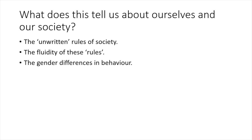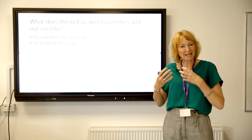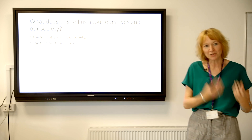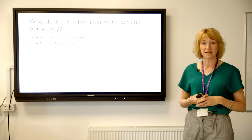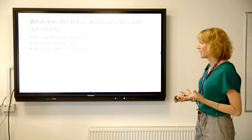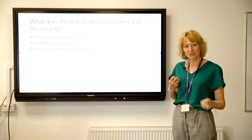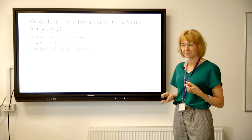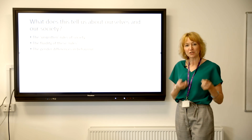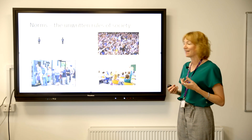So what does this tell us about society and ourselves? What I've wanted to demonstrate is that there are unwritten rules of our behaviour, and that these rules are often fluid — so our behaviour in one situation might be inappropriate or different in another, in this example urinating. It also flags up the gendered nature of our behaviour and the gender differences in how we behave. This leads on to one of our most important concepts in sociology: that of norms.